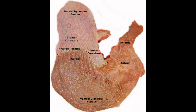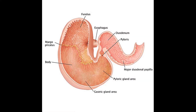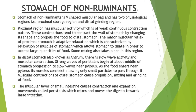Now let's move to the stomach of non-ruminants. The stomach of non-ruminants is a V-shaped muscular bag divided into two physiological regions: the proximal region and the distal region. The proximal region serves a storage purpose while the distal region has a grinding function. The proximal region has weak continuous muscular contractions that propel food to the distal stomach, and also mixes the food. The major muscular reflex of the proximal stomach is adaptive relaxation, characterized by relaxation of stomach muscles so that large quantities of food can be easily accommodated.